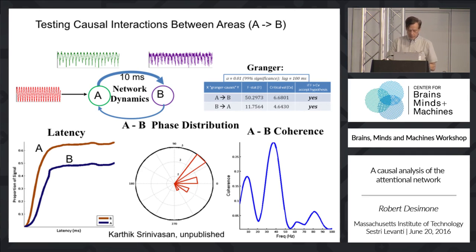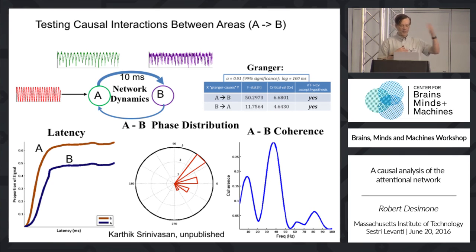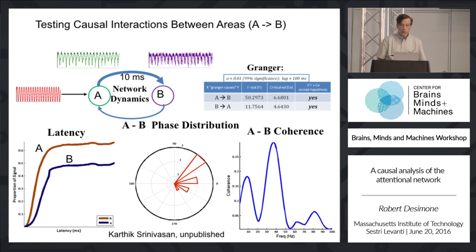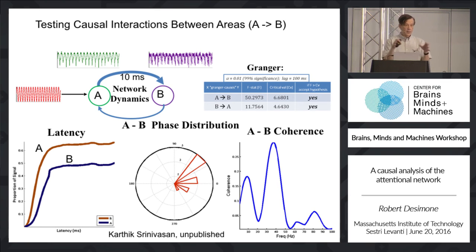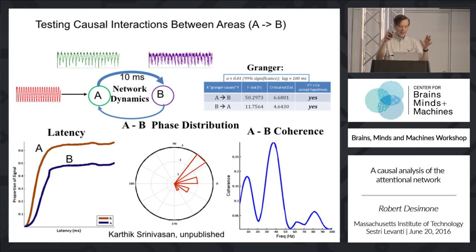So we've been trying to bring a number of tools to bear on this question of causality: what gets these processes started, and then how do they affect their targets? Some of those tools involve just analysis of the precise timing of signals across structures. Imagine, in this toy example, areas A and B that are reciprocally connected.